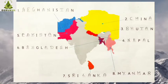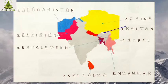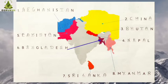Now let us revise one more time. The neighboring countries of India are: 1st, Afghanistan; 2nd, China; 3rd, Bhutan; 4th, Nepal; 5th, Pakistan; 6th, Bangladesh; 7th, Sri Lanka; 8th, Myanmar.